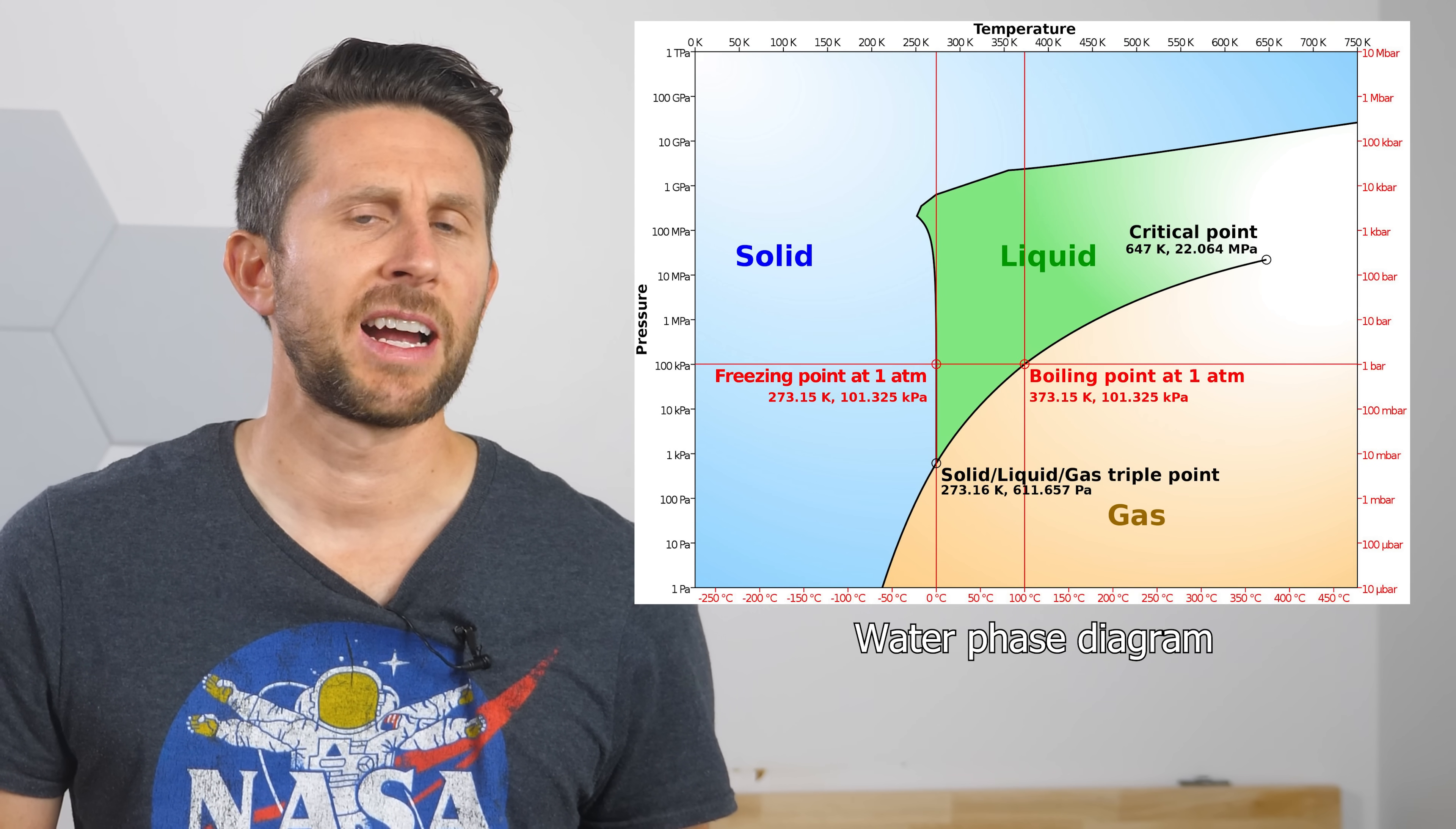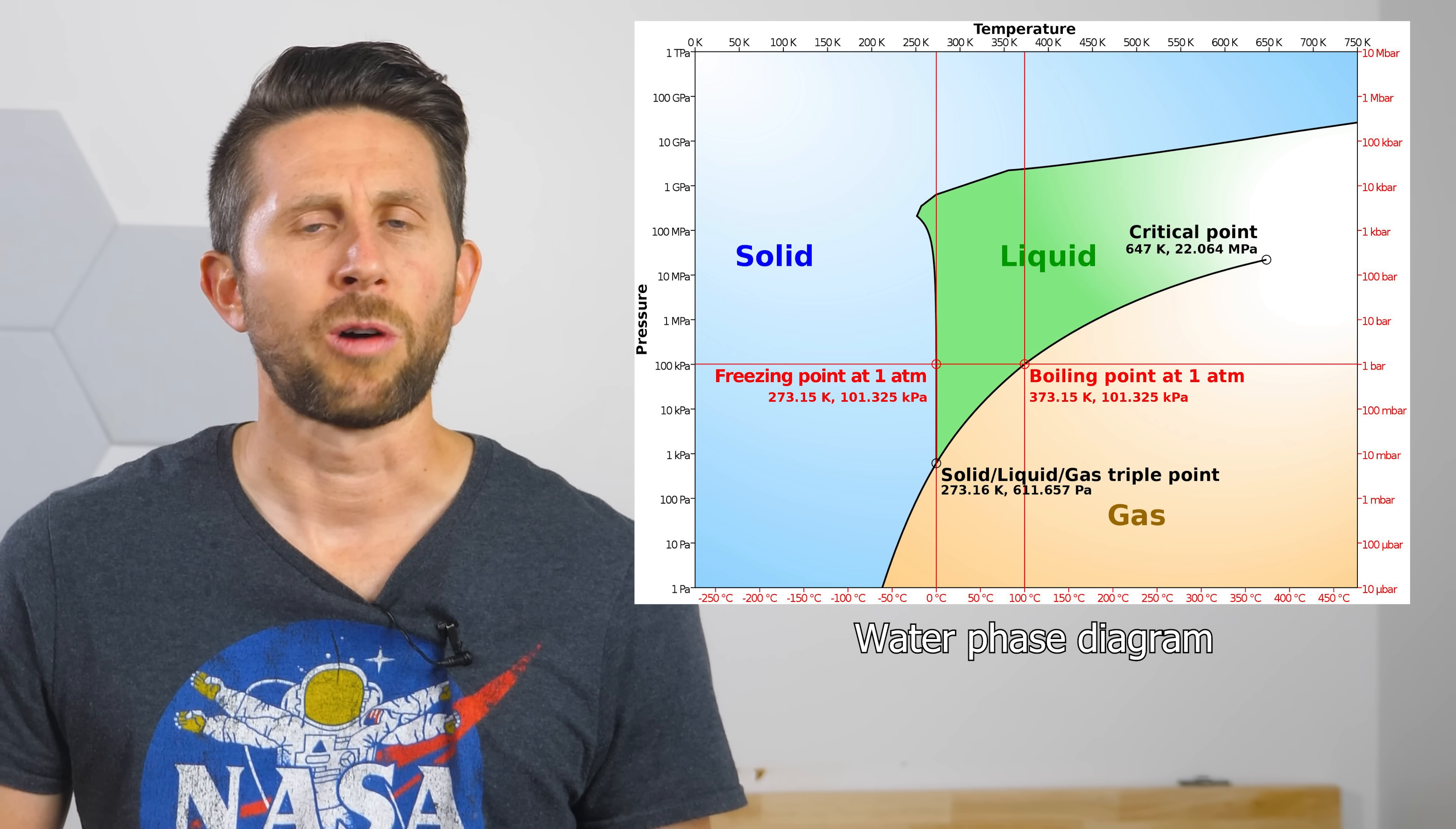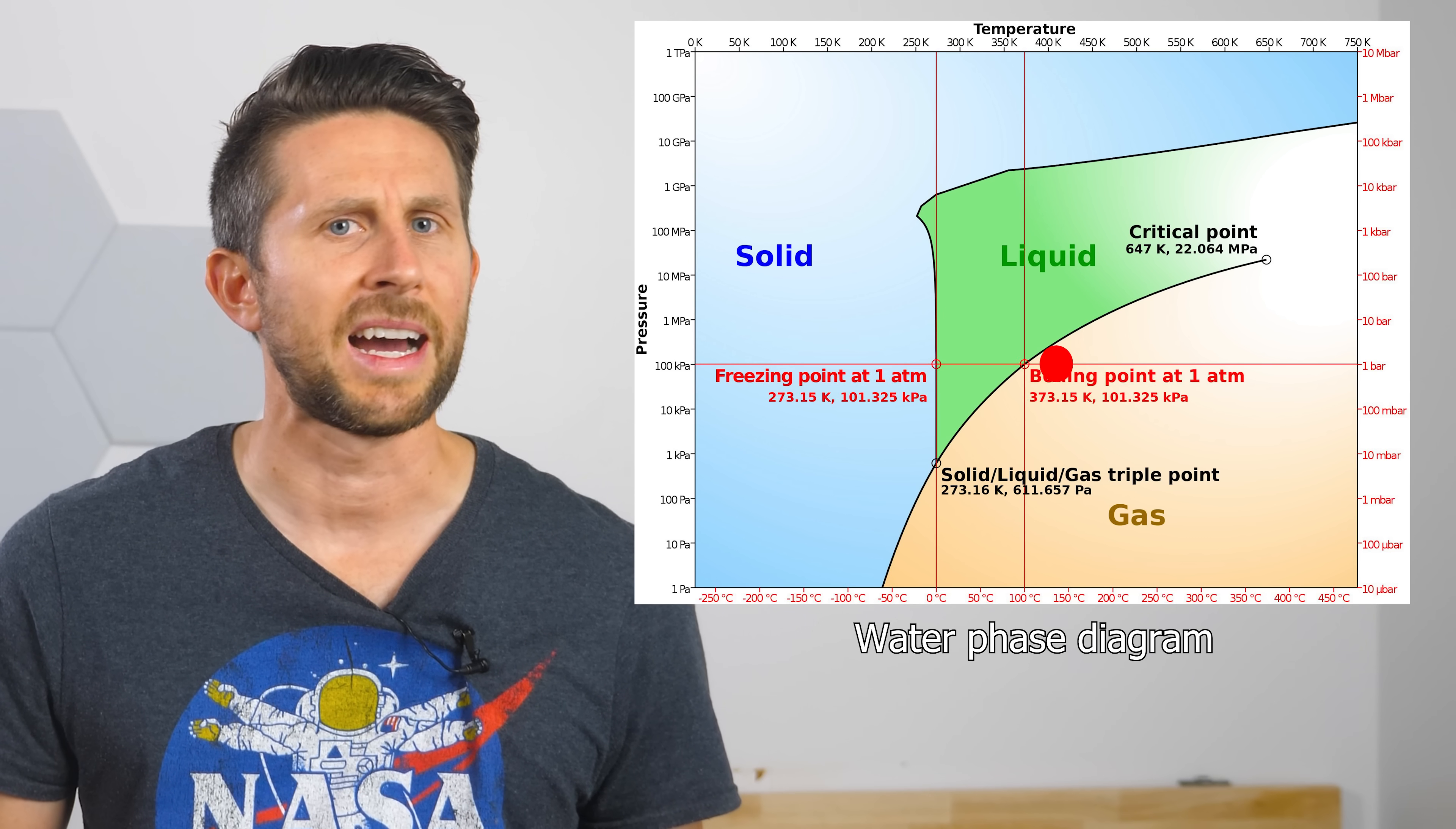So dry ice is frozen CO2, just like regular ice is frozen water. If you look at a phase diagram for water and dry ice, you'll see that with both of them, if we start off in the frozen state, meaning solid at atmospheric pressure, and then I heat them up, for the water will cross this line, which means that the solid will turn to a liquid. But then as I continue to heat it up, it'll turn into a gas.